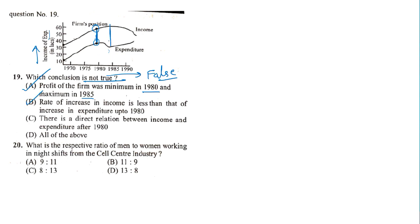Statement C: there is a direct relationship between income and expenditure after 1980. After 1980 there is no particular relationship between expenditure and income — the graph behaves erratically after that point. Till 1980 there is a relationship, but after 1980 there is none. So statement C is not true — C is false. Therefore the answer is C.